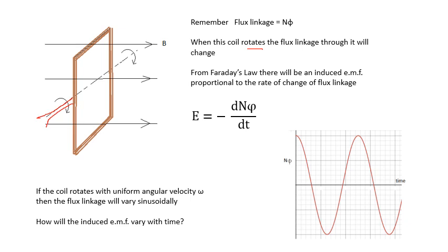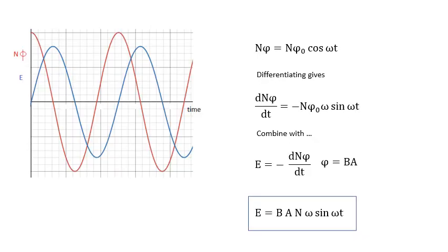And if the coil rotates with a uniform angular velocity, then NΦ, the flux linkage, will vary sinusoidally, won't it? Like, it'll be like a maximum in that position. Then, when the coil is parallel to the field, it will be zero. And then it will turn all the way around. So, the flux will come through it the other way, etc., etc. So, NΦ will vary sinusoidally. How will the induced EMF vary with time? Look at this equation. If NΦ is a cosine, then the EMF will be a sine wave.